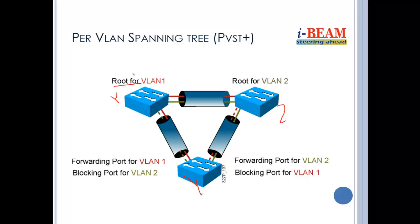VLAN1 is one spanning tree instance and VLAN2 is a separate spanning tree instance. Each VLAN has a different spanning tree algorithm and a different spanning tree instance — this is PVST, Per-VLAN Spanning Tree.